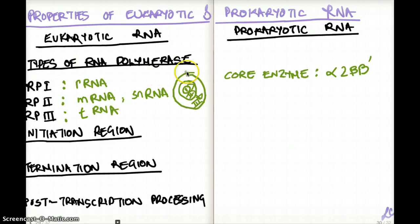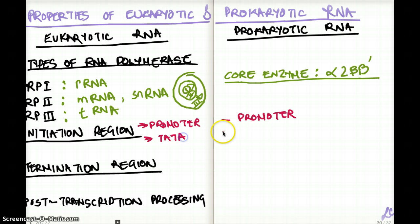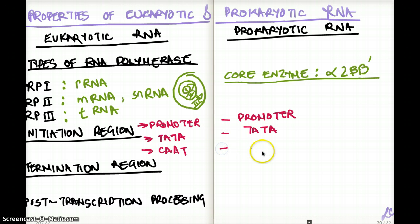For prokaryotes, the RNA polymerase is the core enzyme alpha-2, beta, and beta-prime. Moving on to the initiation region: both eukaryotes and prokaryotes have a promoter and a TATA box. However, the CAT box is not found in prokaryotes — it is eukaryote-specific.